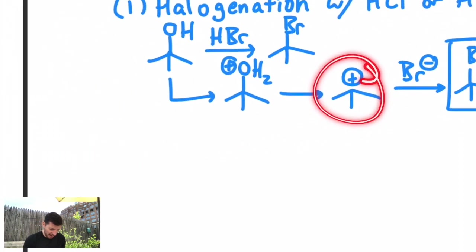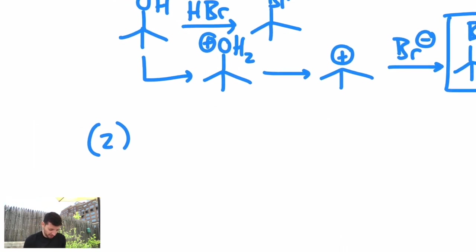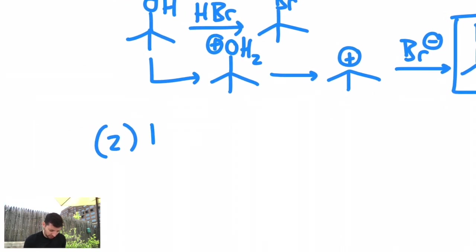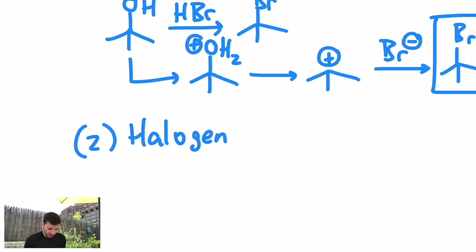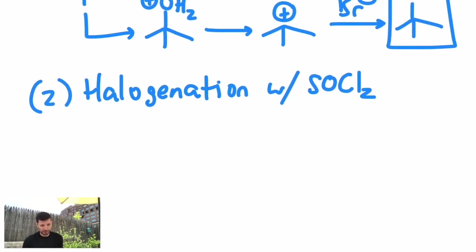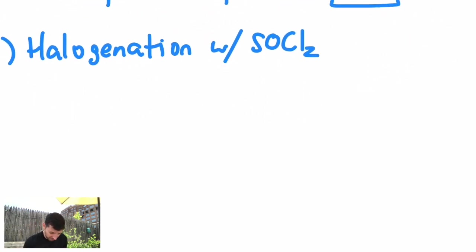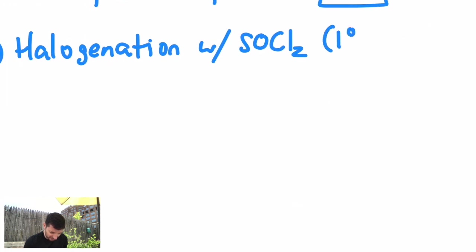There's a second way to halogenate. What if I don't have a good carbocation? You can halogenate with a reagent known as thionyl chloride, SOCl2. This is a special reagent for chlorination. That means you turn the OH into a chlorine. This is good for primary alcohols and secondaries, depending on how good the cation is.